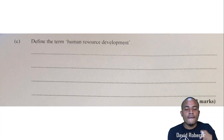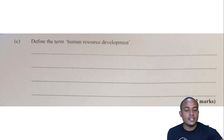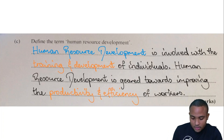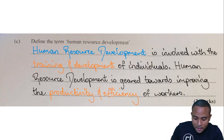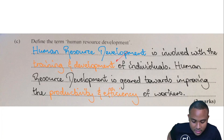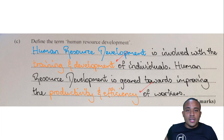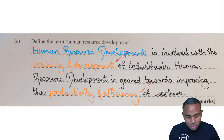Moving on to question five, part C: define the term 'human resource development.' Human resource development is involved with the training and development of individuals. It is geared towards improving the productivity and efficiency of workers. That's how we get our two marks.